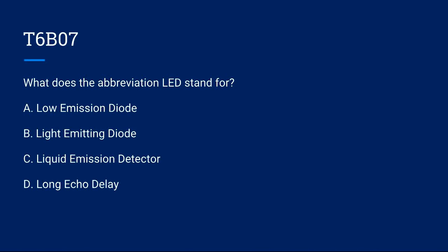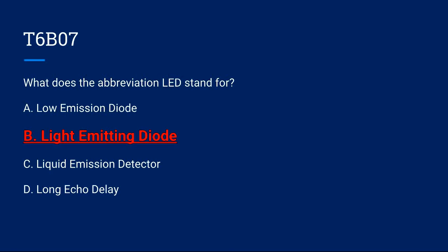T6B07: What does the abbreviation LED stand for? A, low emission diode. B, light emitting diode. C, liquid emission detector. Or D, long echo delay? The correct answer is B, light emitting diode.